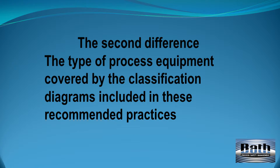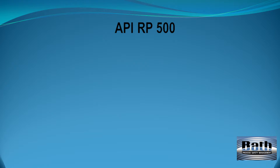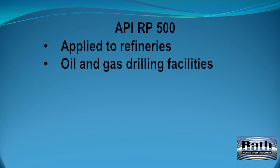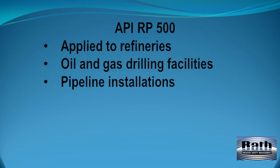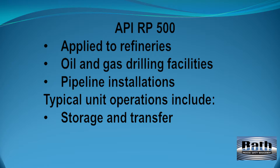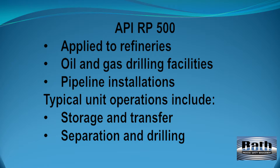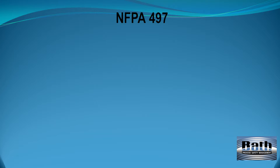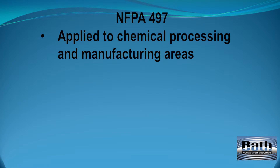The second difference is the type of process equipment covered by the classification diagrams included in these recommended practices. The titles of the two documents give an indication of each one's focus. API-RP500 is typically applied to refineries, oil and gas drilling facilities, and pipeline installations. Typical unit operations include large volume material storage and transfer, separation, and drilling operations both on land and offshore.